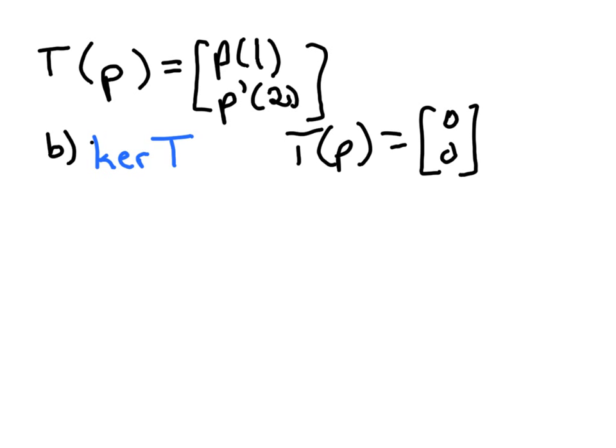So this would be the set of all polynomials p that are mapped to the zero vector, so in this case [0,0], which would mean that p(1)=0 and p'(2)=0.